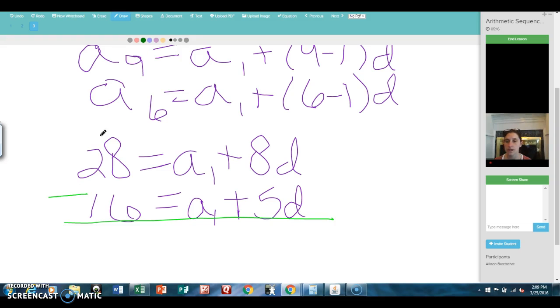I can solve these by just subtracting them. If I subtract these two equations, the A1 terms are going to cancel out. So let's see, that will give me 12 equals 3D. So that means the common difference is 4.